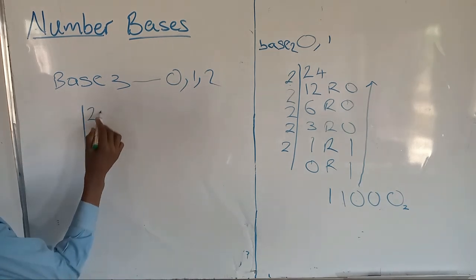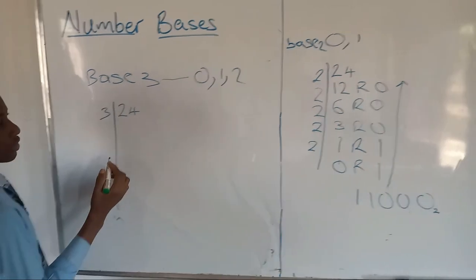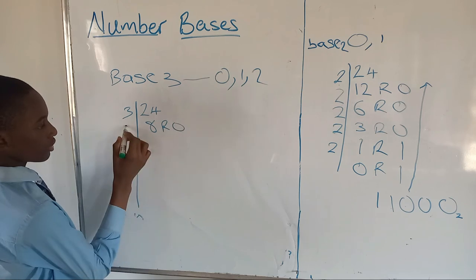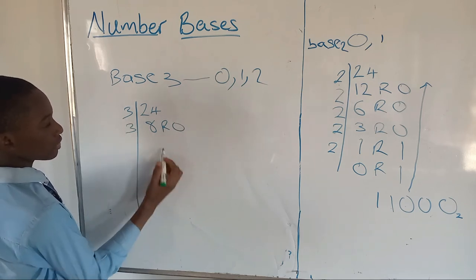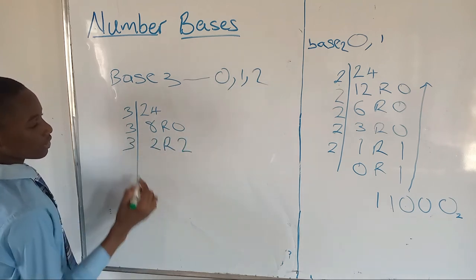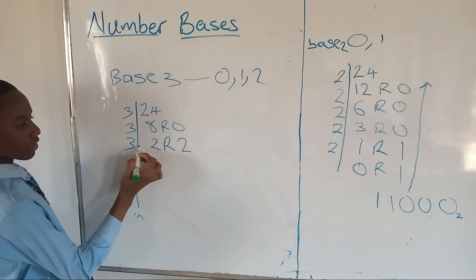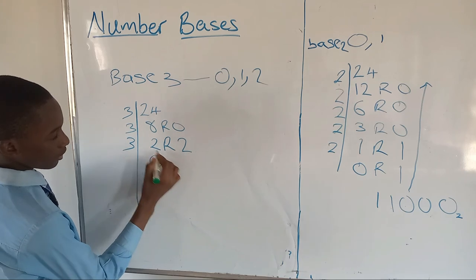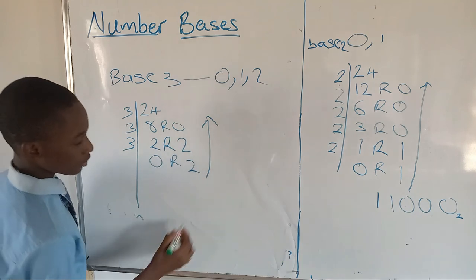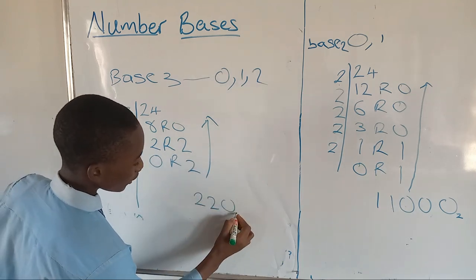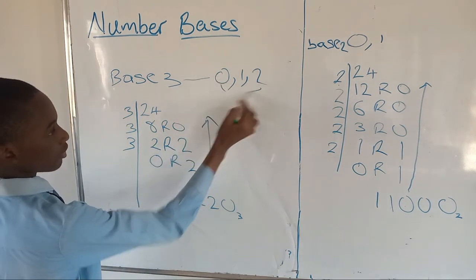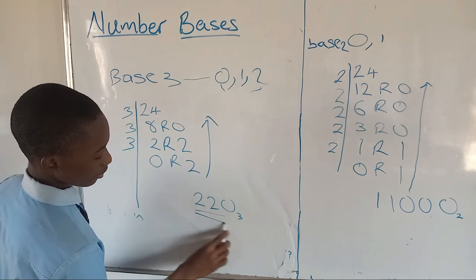Let's change twenty-four to base three. So three into twenty-four is going to go eight times, remainder zero. Three into eight is going to go two times, remainder two. Three into two goes zero times, remainder two. So we have 220 base three. We said we have zero, one, and two. These are the two numbers that come from this equation.